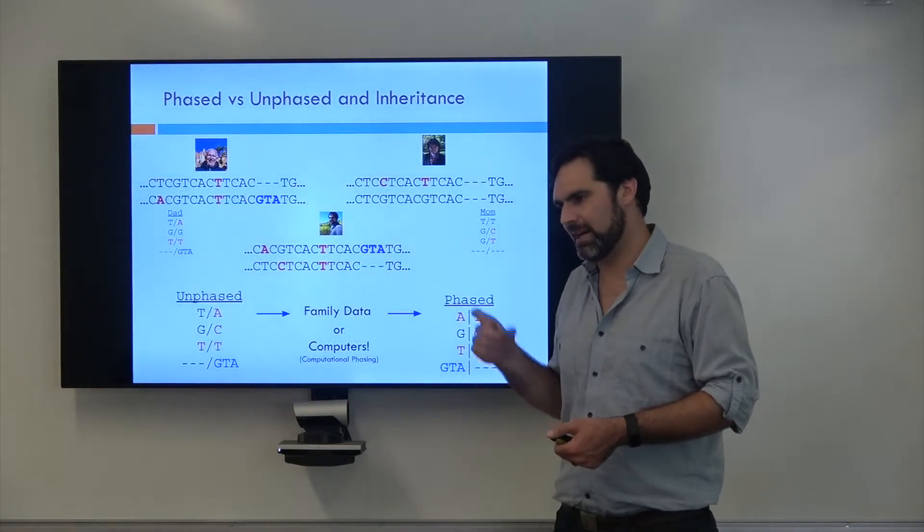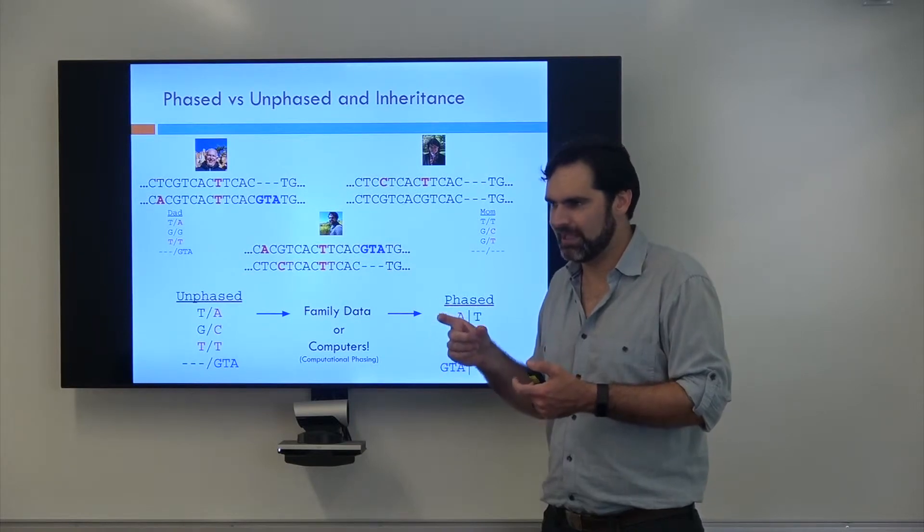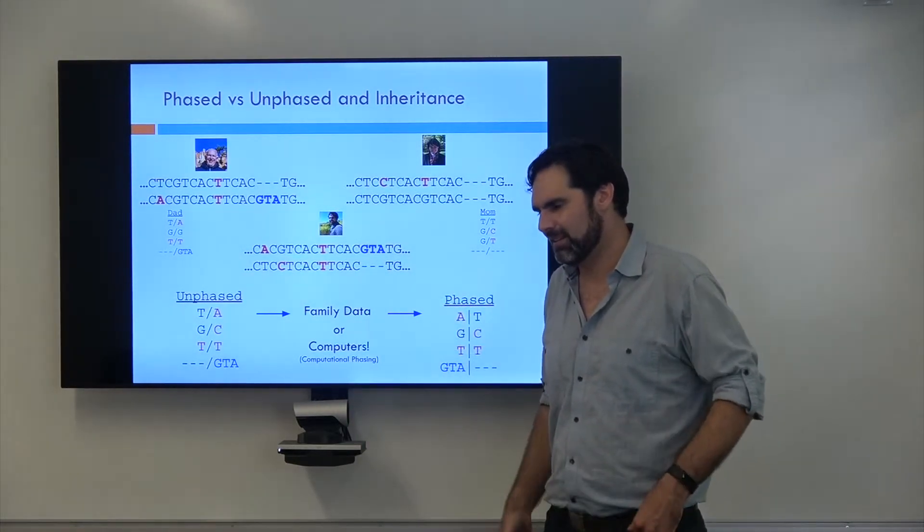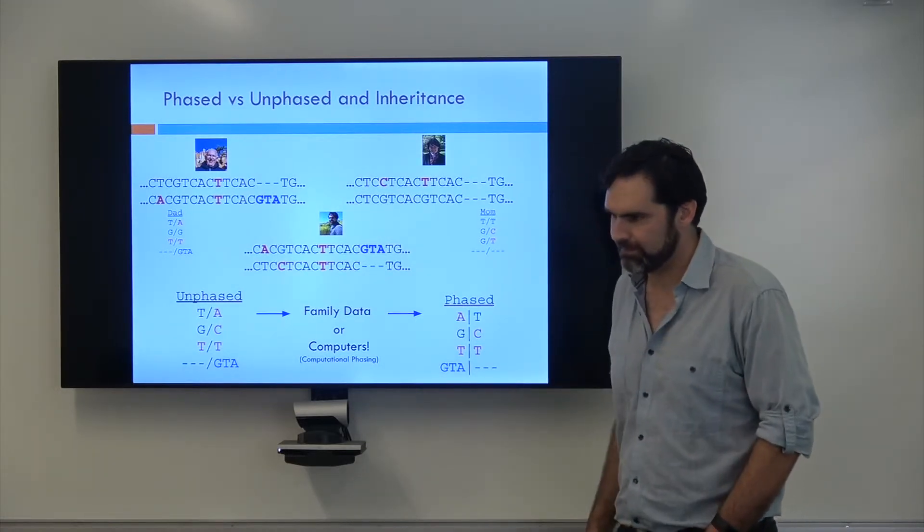And then you try to match that DNA up to genomes that you do know, and you kind of see where they align, but you don't preserve the whole sequence when you do that. So all the assemblies and computation happen after you get all the reads.